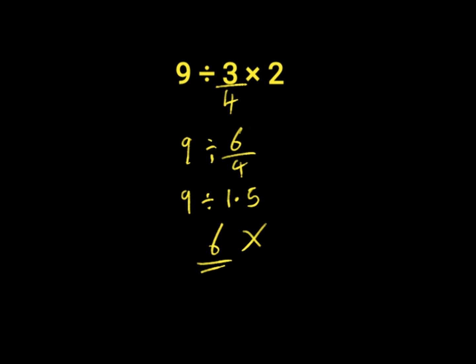6 is the wrong answer to this question because we did not work with the order of operations, which is BODMAS. In BODMAS, division and multiplication have equal priorities, so we are to work from left to right in order to arrive at the correct answer.